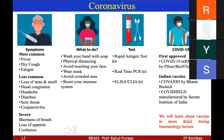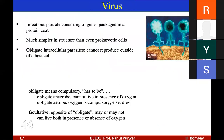What to do: wash your hands with soap, maintain physical distancing, avoid touching your face, wear a mask, avoid crowded areas, and boost your immune system. Tests available include rapid antigen kits, real-time PCR kits, and ELISA-based protein assays. For cure, prophylactic vaccines are available: mRNA vaccines from Pfizer/BioNTech, Covaxin made by Bharat Biotech, and Covishield manufactured by the Serum Institute, both approved in India.